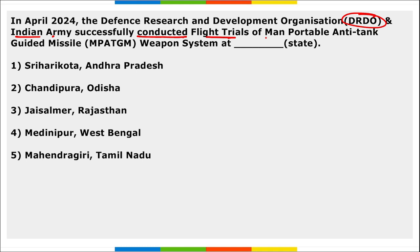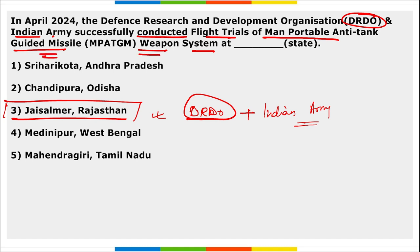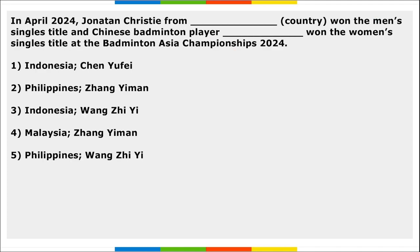Next: in April, DRDO and the Indian Army successfully conducted the flight test of a man-portable anti-tank guided missile weapon system. This was conducted at Jaisalmer, Rajasthan. DRDO along with the Indian Army conducted this flight test to test the man-portable anti-tank guided missile weapon system.